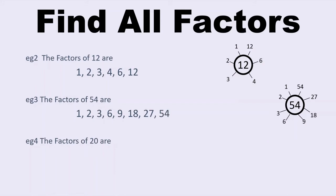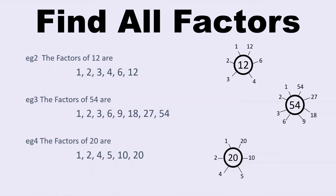Finally, for 20, go ahead and set up your factor spider. Start with the smallest factor — that's 1 — it gives you the biggest factor: 20 divided by 1 is 20, so we've got a pair. Next we'll try 2 — 20 divided by 2 is 10. Does 20 divide by 3? No, the closest multiple of 3 is 21. So skip 3. Can we divide by 4? Yes — 20 divided by 4 is 5. So we've got all of our factors; there's nothing left to try between 4 and 5. The factors of 20 in order are: 1, 2, 4, 5, 10, and 20.